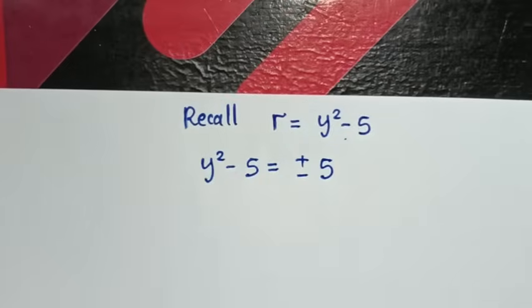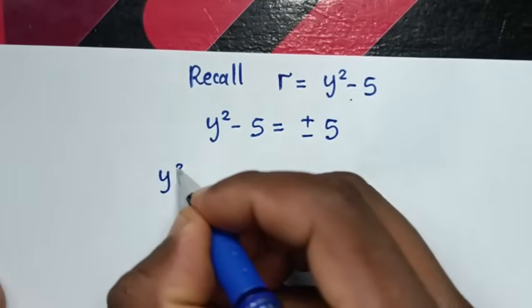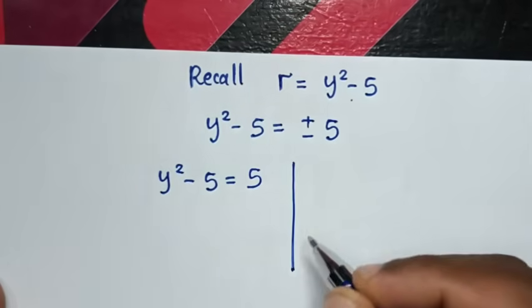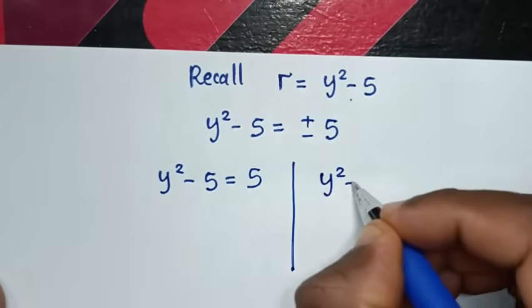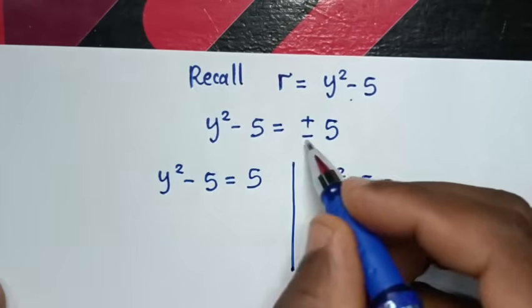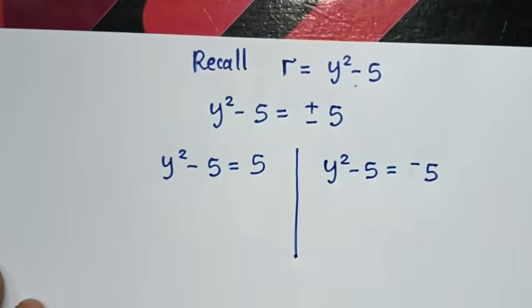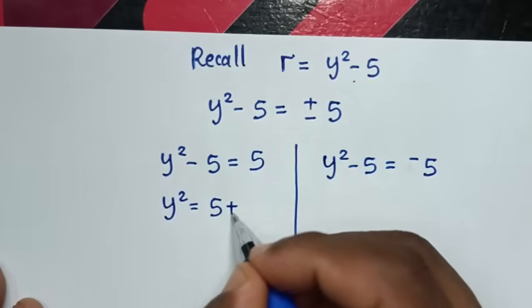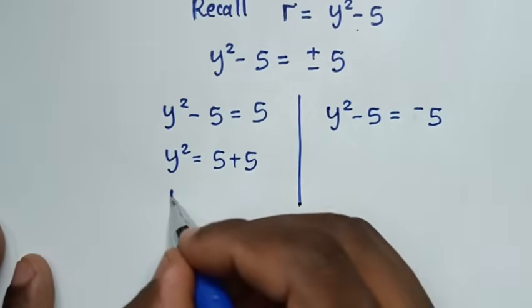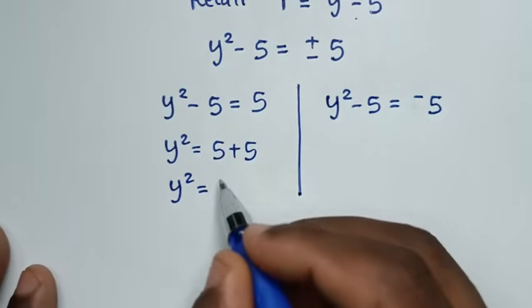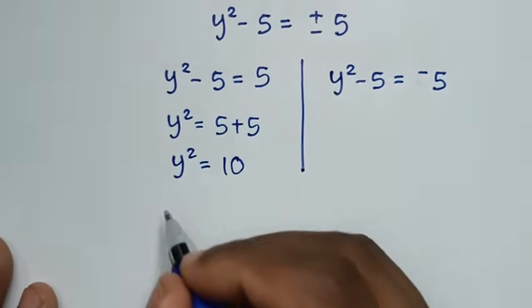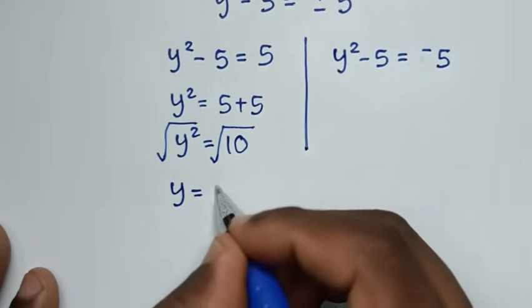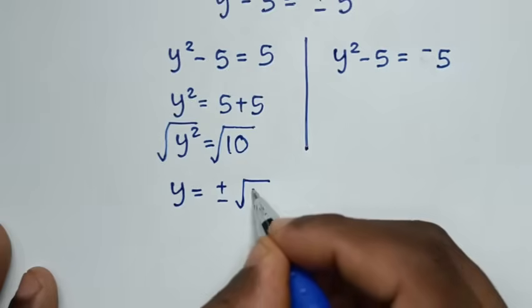First solution: y²−5 = +5, so y² = 10. Applying square root, y = ±√10.